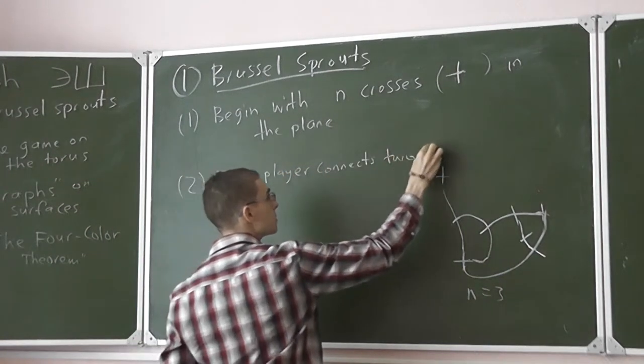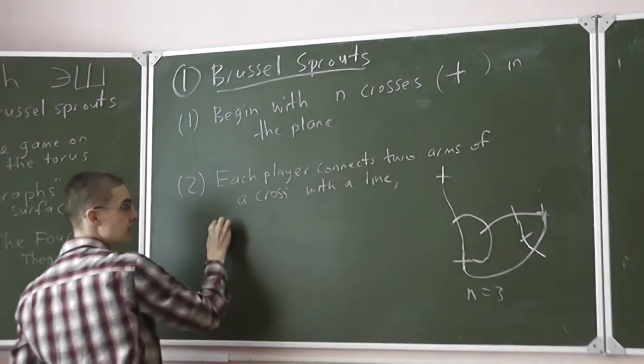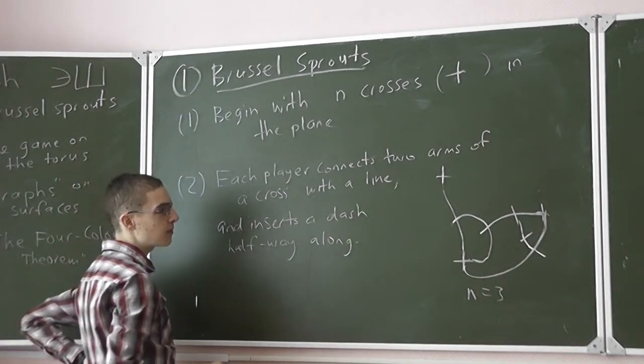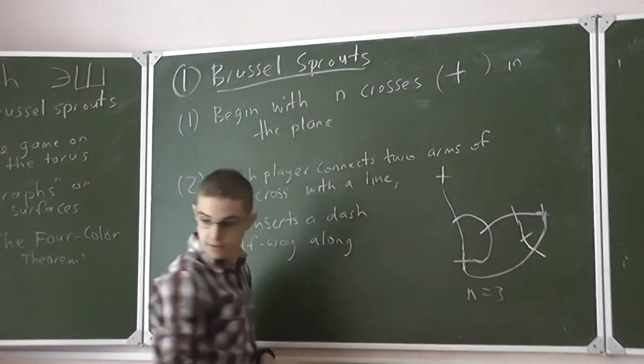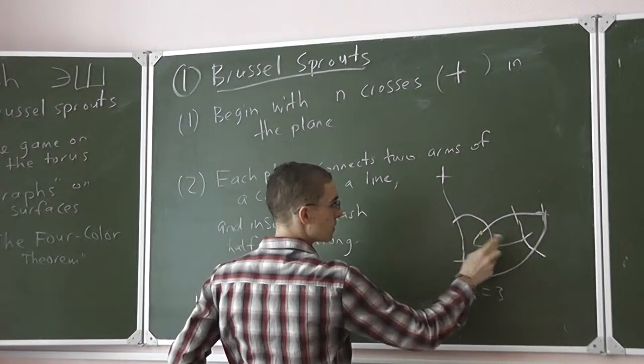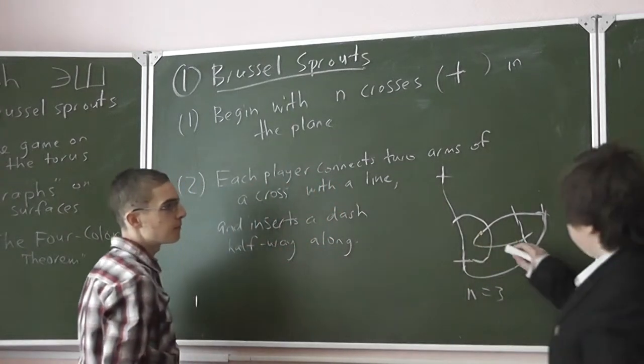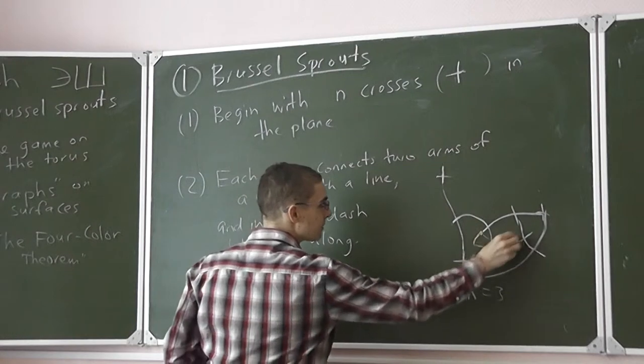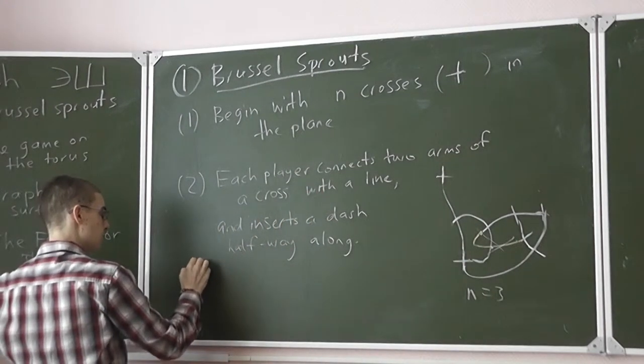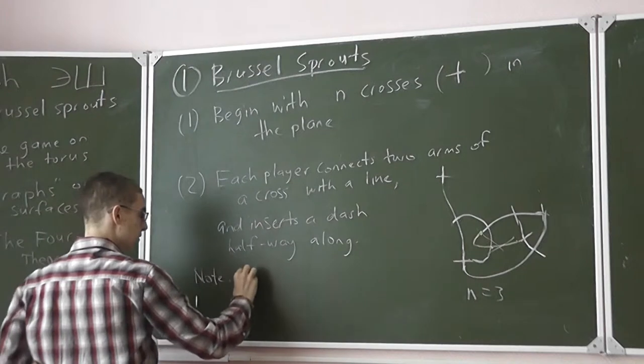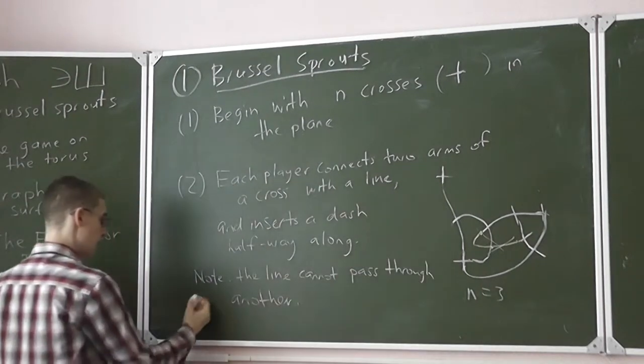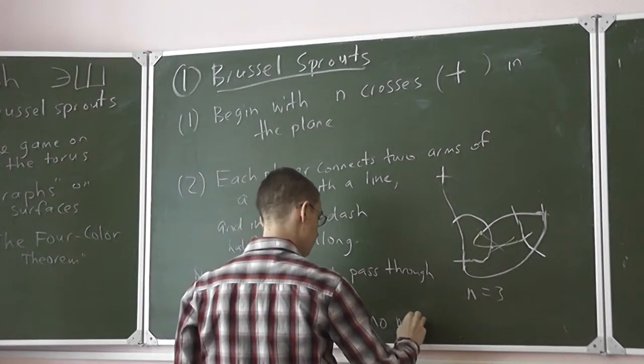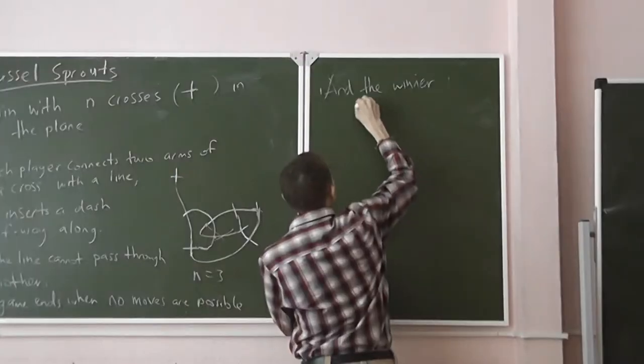Connects two arms of a cross with a line and inserts a dash halfway through. What is the criteria that we require when we make this line? For example, can I do this? Right, so that's a bad move. So the rule is no, a line cannot pass through another. And the game ends when no moves are possible, and the winner is the last to move.